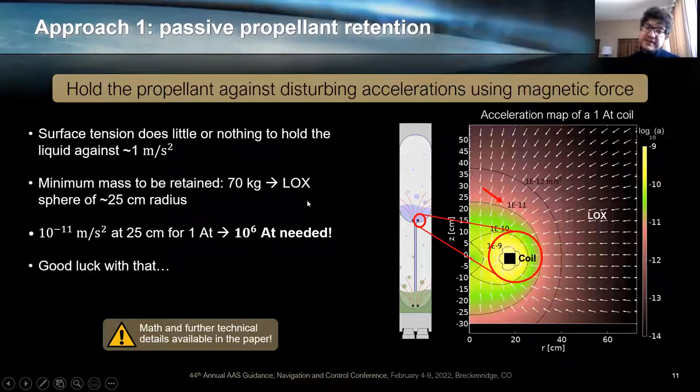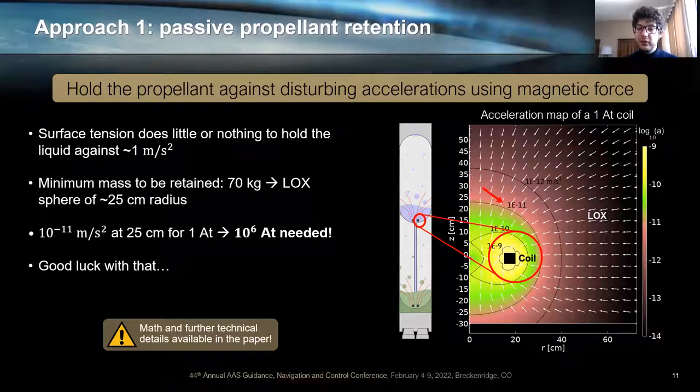This acceleration scales with the square of the current intensity, which means that we need at least 1 million ampere-turns to hold the liquid against 1 meter per second squared. Well, my friends, good luck with that. That is an absurd and brutal value for any kind of magnetic technology that we use nowadays. This is huge. And just to give you an idea, it's like if you had a single loop of current with a million amperes flowing through it. Not even superconductors can reach this value nowadays. So this is discarded.